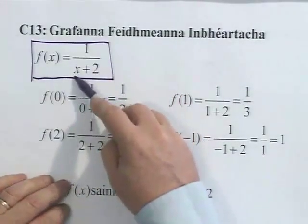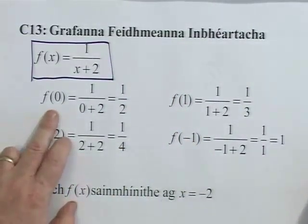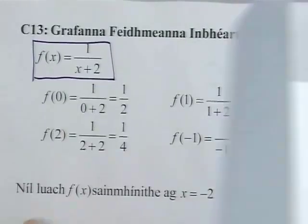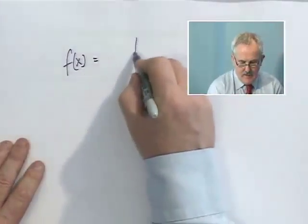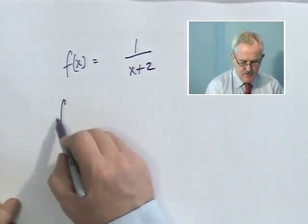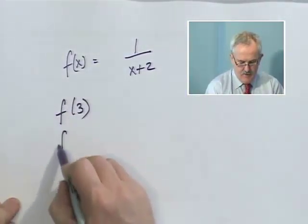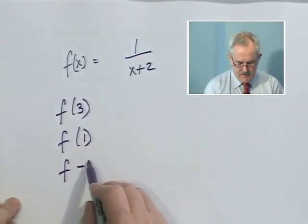The f(x) is 1 over x plus 2. So, f(0), f(3), f(x) when x equals 3, and f(-3).